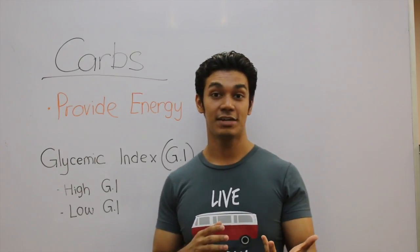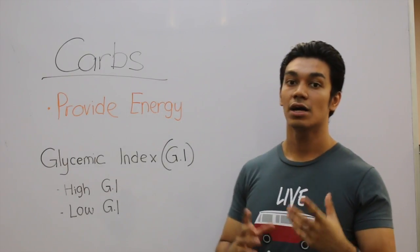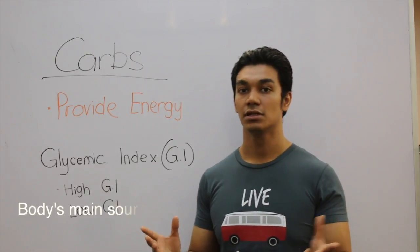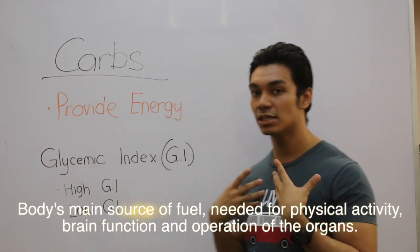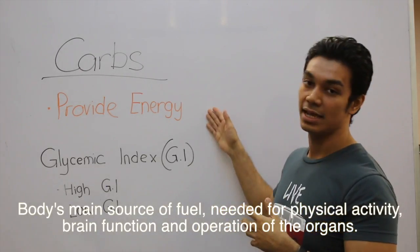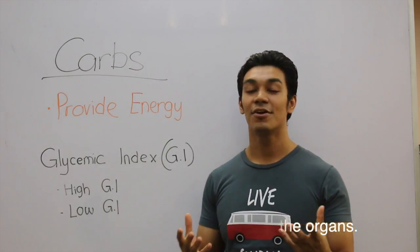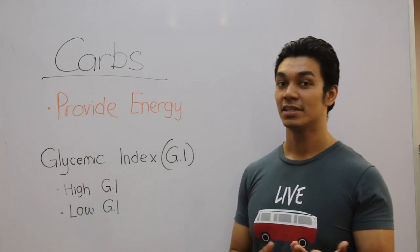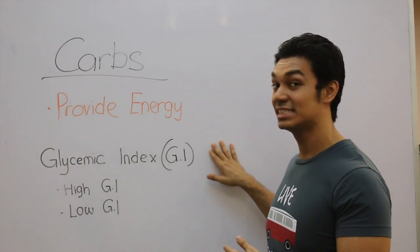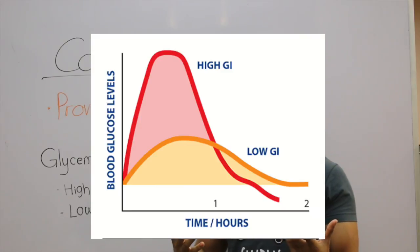The first macronutrient we're going to touch is carbohydrate. Carbohydrate has many functions but the main function you need to know is that it provides our body energy. Now all carb sources are ranked according to their GI value. GI stands for glycemic index, which is the effect on raising our blood sugar level.